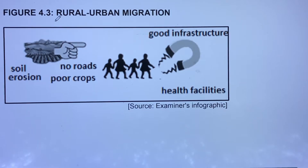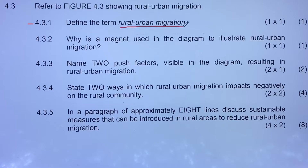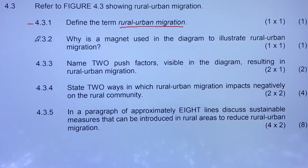Let's move to question 4.3.1, which says: define the term rural-urban migration. Rural-urban migration is the movement of people from rural areas to urban areas.